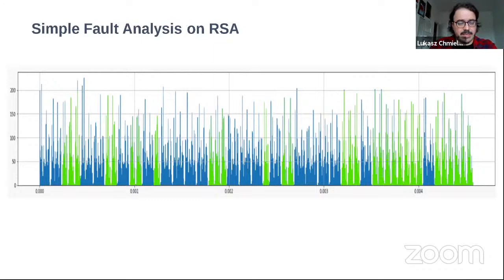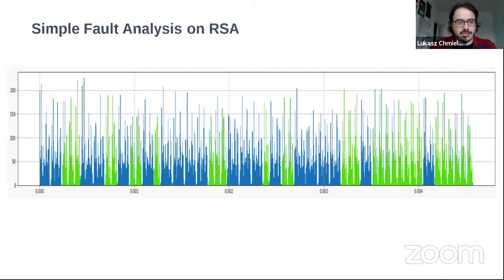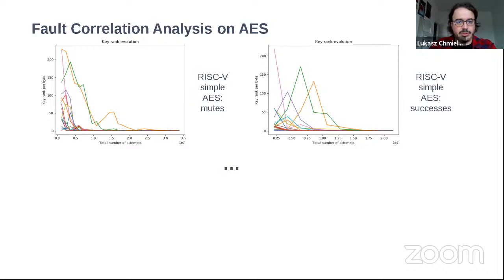Looking at RSA first: this is a characterization trace of a simple square-and-multiply implementation where operation leakage should reveal the key bits. In light green we mark zeros and dark blue marks ones — we are able to recognize zeros from ones using fault injection. This is a translation of simple power analysis to simple fault analysis. For AES with a CPA approach, we collected traces, ran correlation analysis, and for both successes and mutes we were able to recover all key bytes. For mutes we needed slightly more traces — around 30 million versus 20 million for successes.